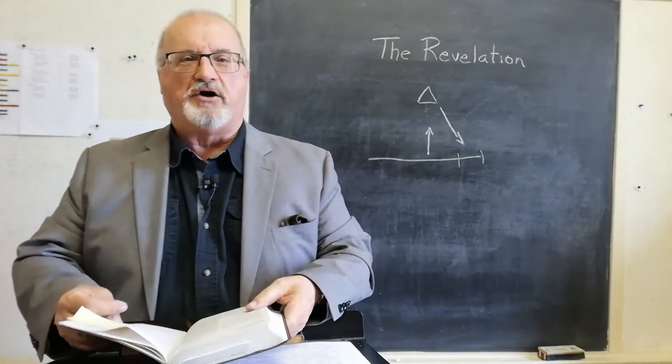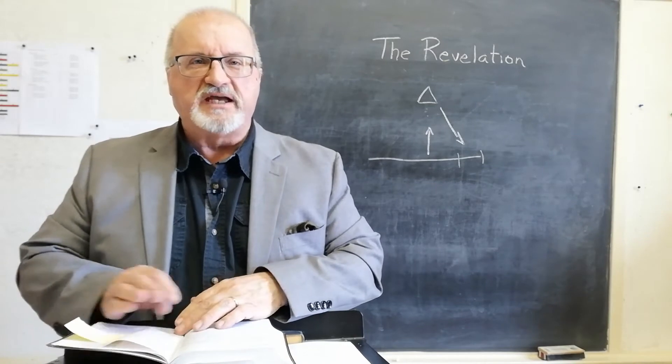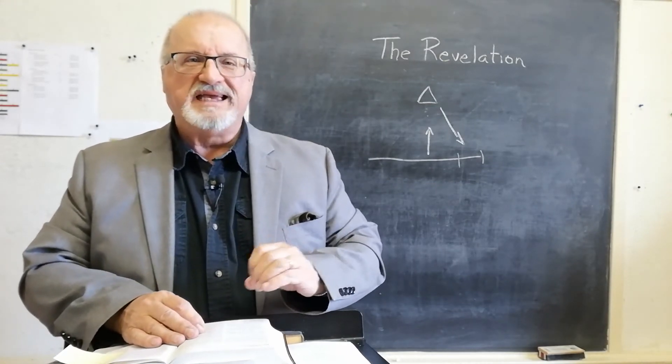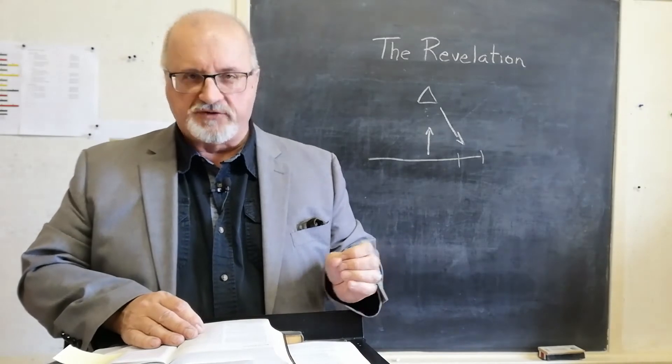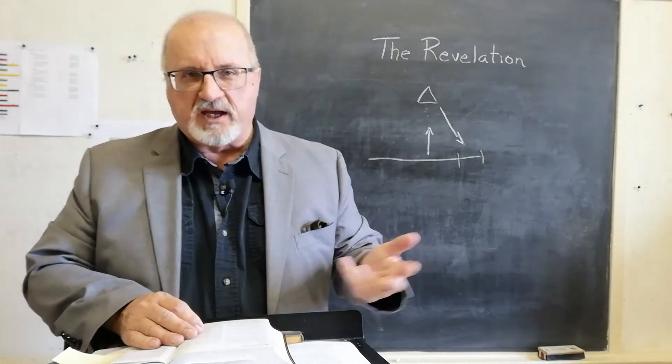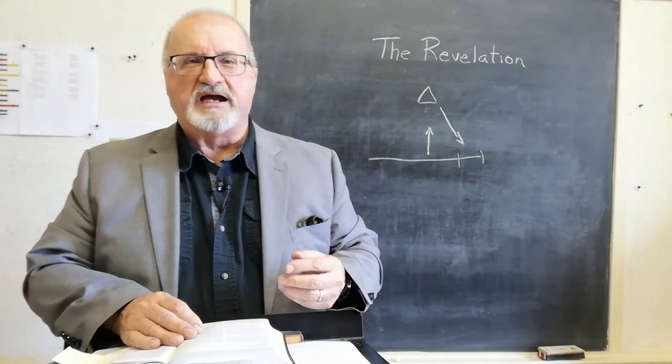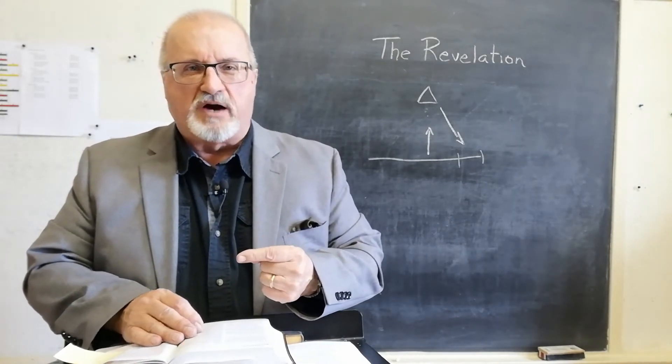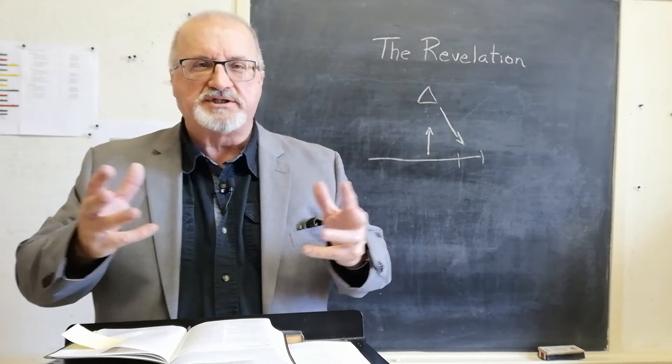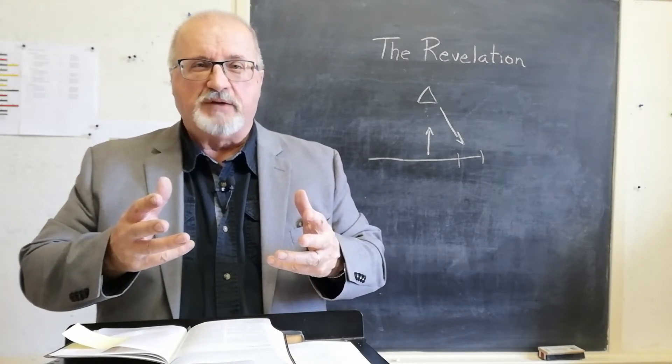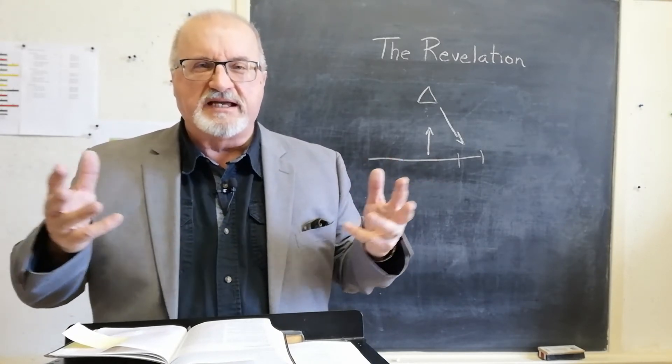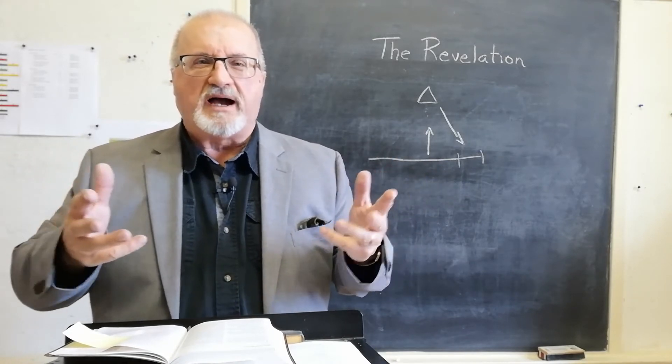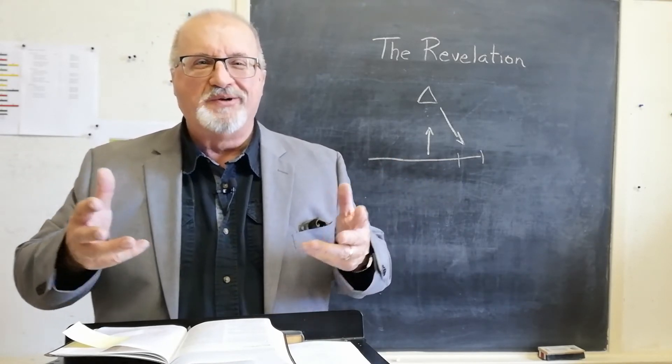And then he says, I am the alpha and the omega says the Lord who is and who was and who is to come the almighty. Now, whenever you see the words, the alpha and the omega, alpha is the first letter of the Jewish alphabet. Omega is the last letter of the Jewish alphabet. It'd be like us saying in our English, I am the A and the Z. What does that encompass? All the other letters in between.